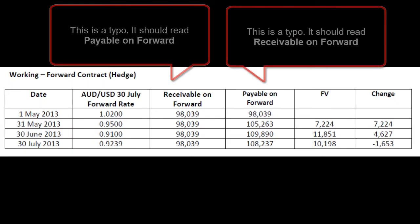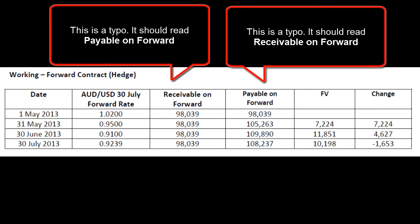When we set this forward up, what we've done is a contract — and it's not one you can just walk away from. We have a contract set up on the 1st of May, and what that's saying is: on the 1st of May, we know that on the 30th of July we are going to receive an asset. That asset in this case is $100,000 in cash. We also know that we are going to pay a certain amount of cash for that, based on the $100,000 US adjusted for that forward rate.